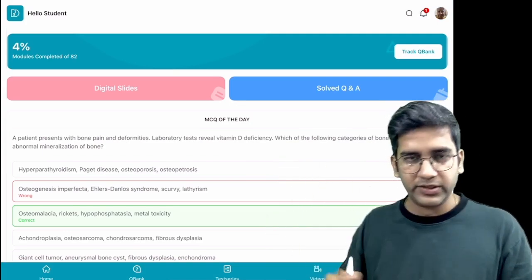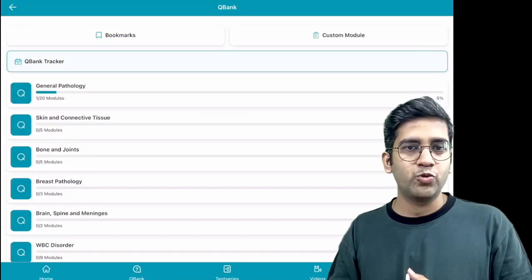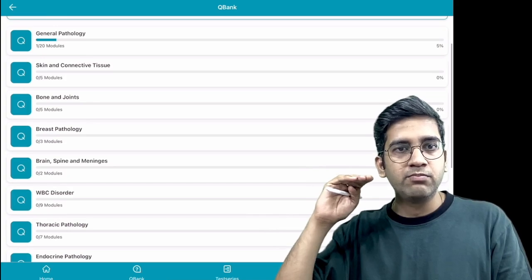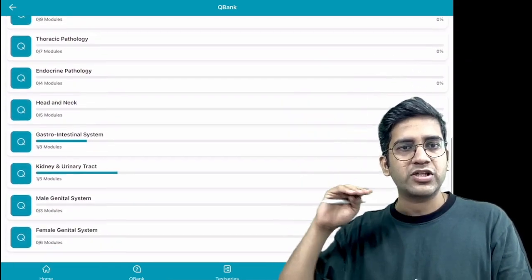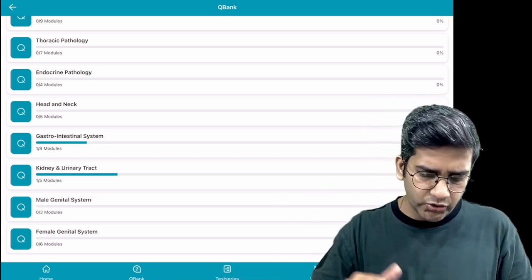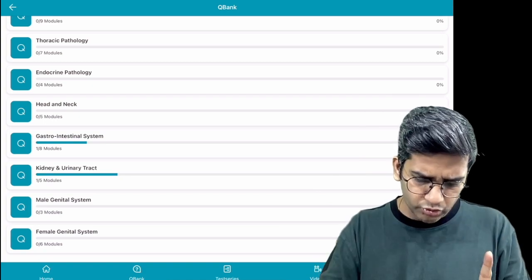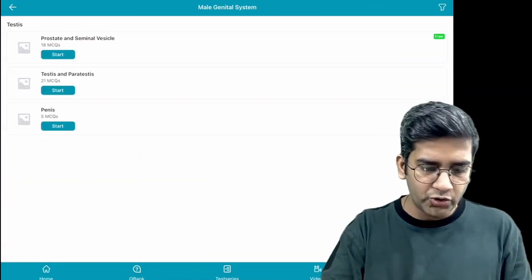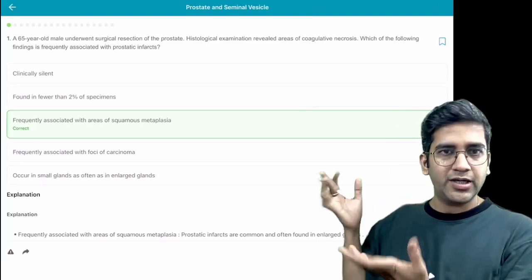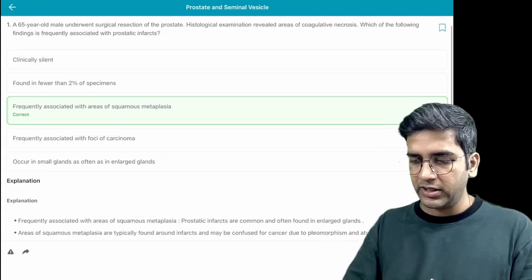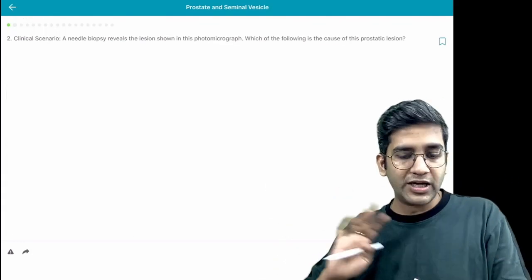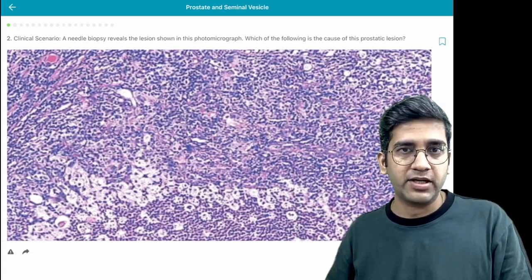Then you go to the second module called Q-bank, categorized as general path, skin, bone, soft tissue, breast, WBC results, everything. This is primarily for a student writing FRC Path or NEET SS exam. Let's click on prostate seminal vesicle. You have the question, you answer right or wrong, the explanation comes here beautifully. There's a next button here. Click on next and it goes to the next question.